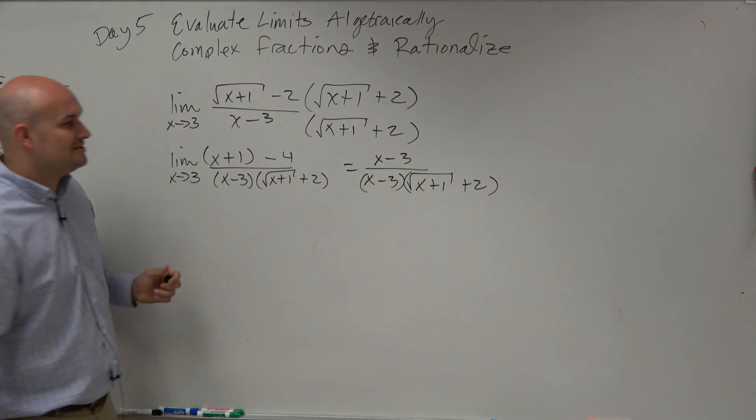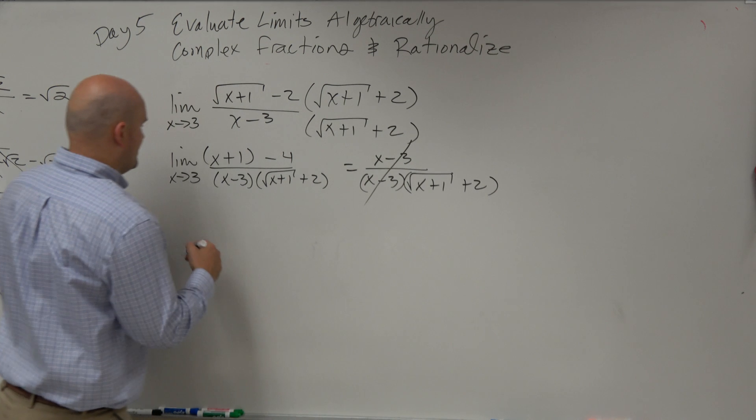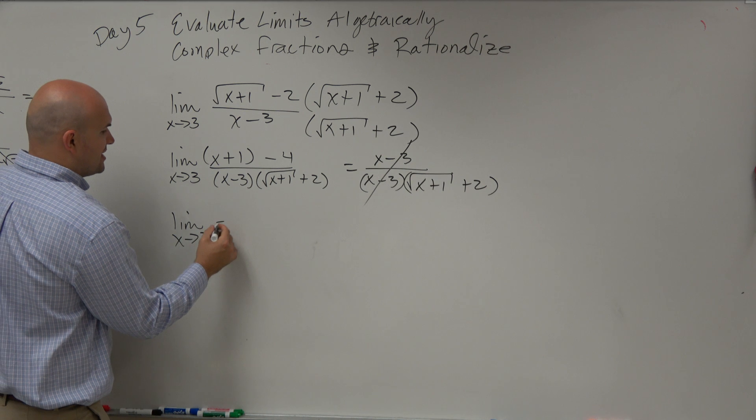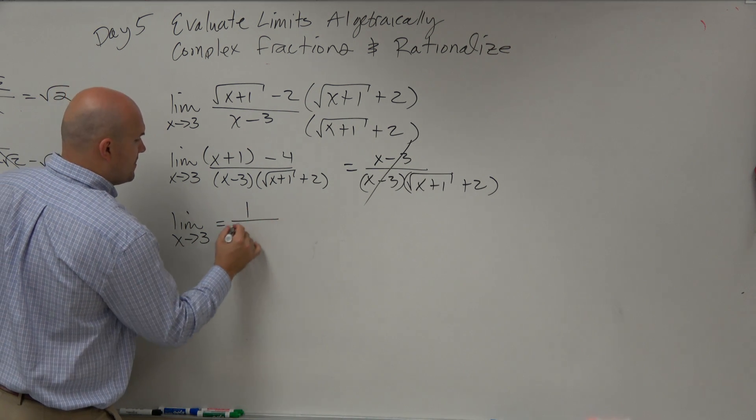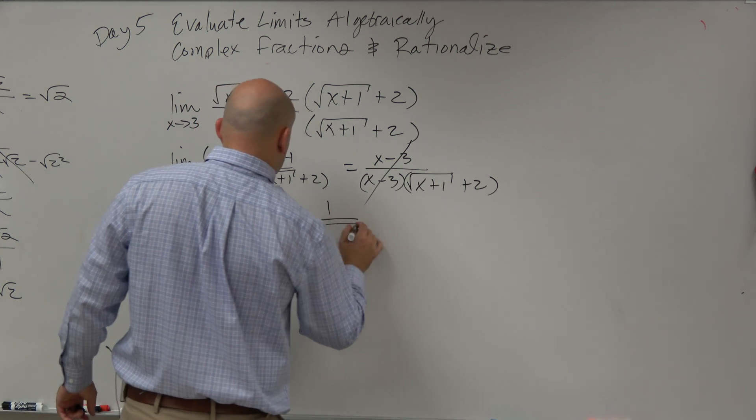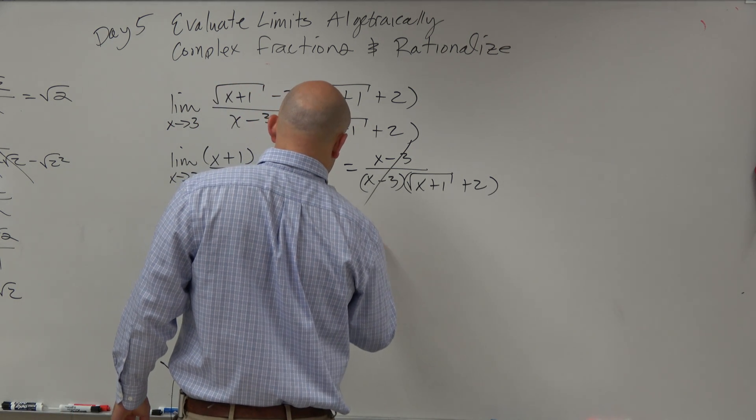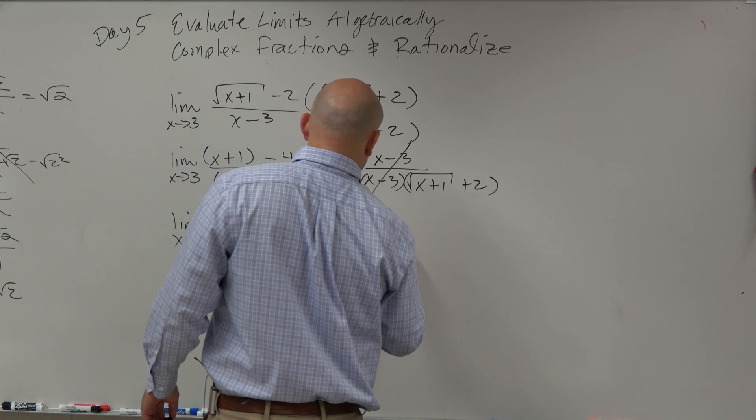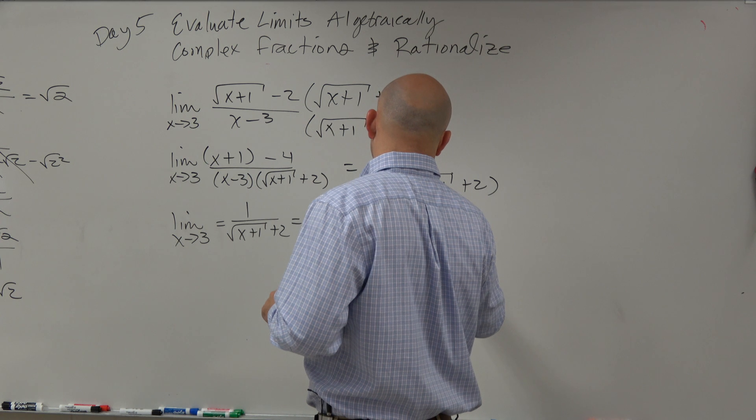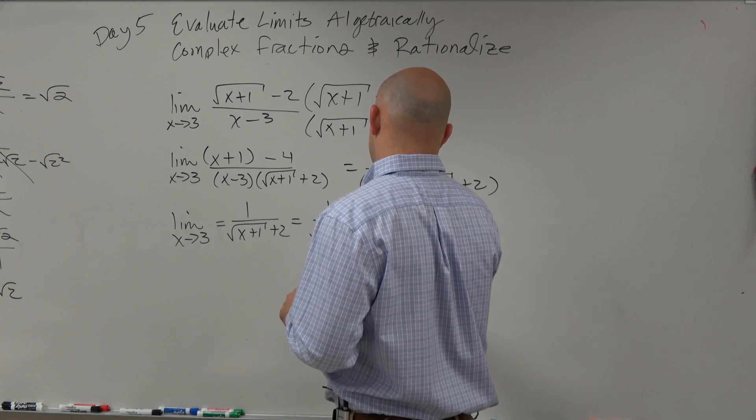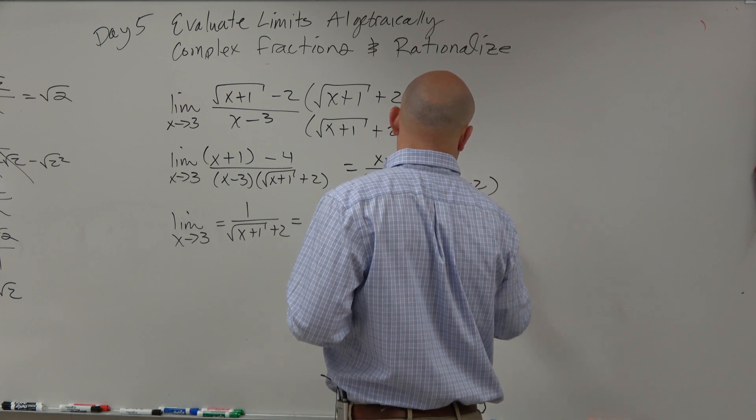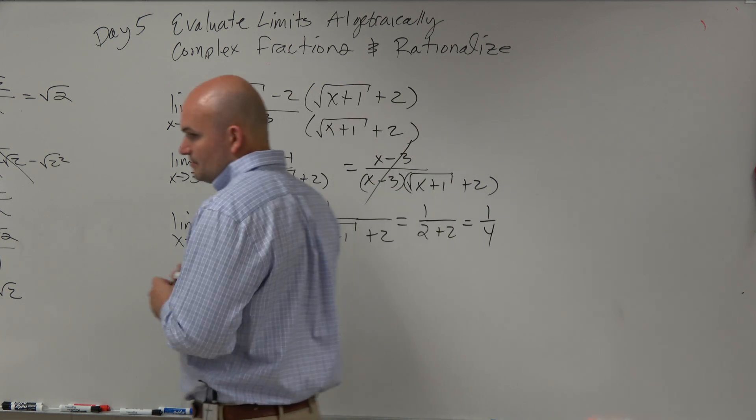What happens with the x minus 3s? Yay, so now, as x approaches 3, I can just directly substitute 1 over the square root of x plus 1 plus 2 equals 1 over square root of 3 plus 1 plus 2. 3 plus 1 is 4, square root of 4 is 2, so that's going to be 1 over 2 plus 2.